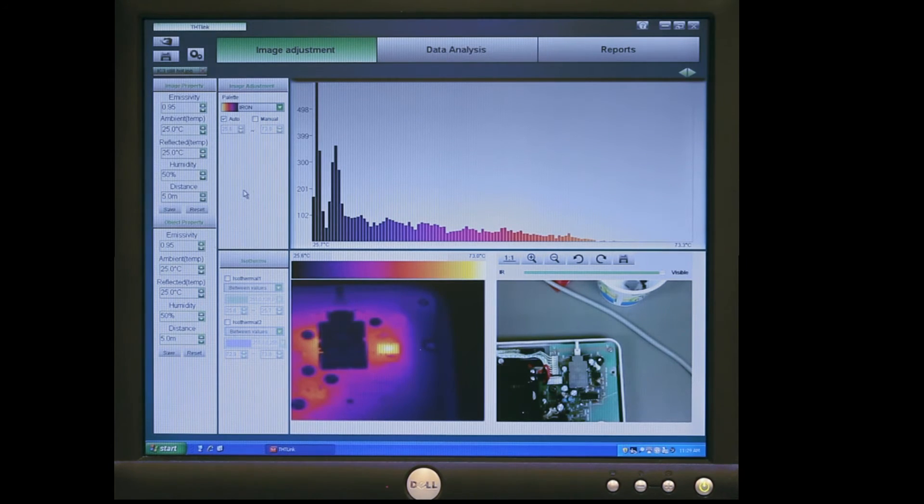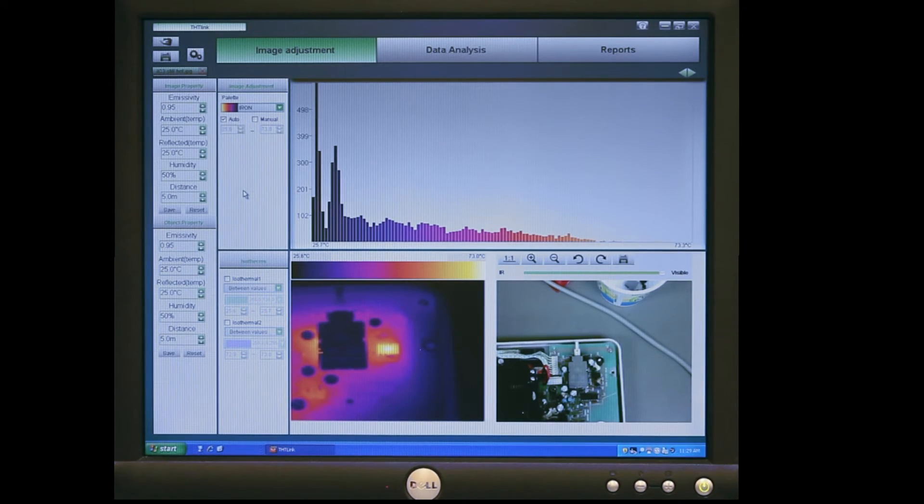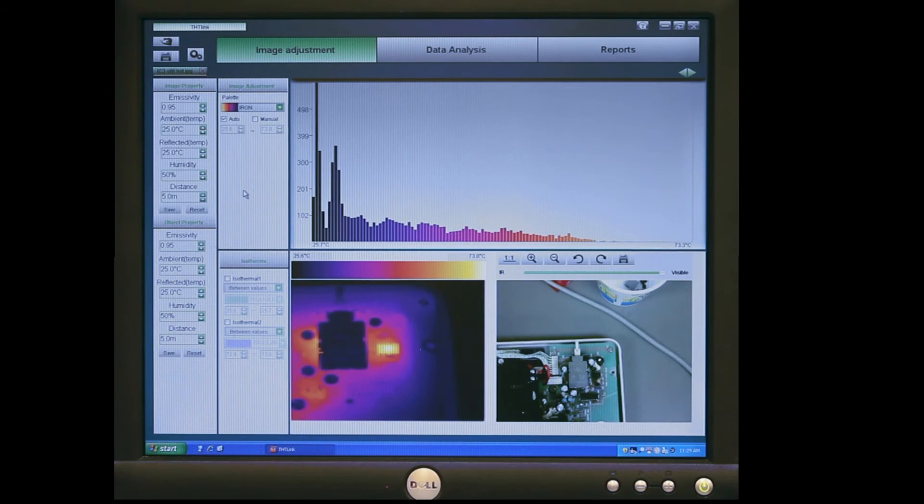This is a view of the software that comes with the IR imaging system. It's called THT-Link and it installs on machines from Windows XP up to the present. So here's the opening page. I'm not going to show about getting files into it because it's very straightforward like any other file management system you've ever seen before. It works beautifully and just brings your files right in.